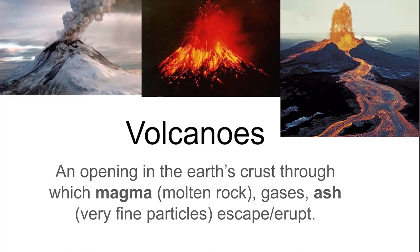Put simply, a volcano is an opening in the earth's crust through which magma, gases, and ash can erupt. Magma is rock that is so hot that it has turned to liquid, and ash is very fine volcanic particles. We'll be exploring those in more detail as we go through here.